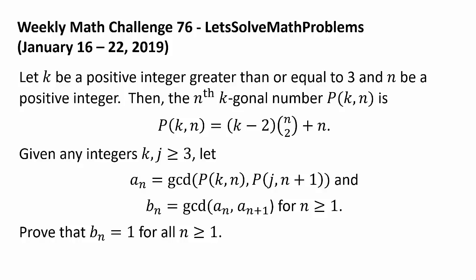let a sub n be the greatest common divisor of P(k,n) and P(j, n+1), and let b sub n be the greatest common divisor of a sub n and a sub n+1 for n greater than or equal to 1. Prove that b sub n is equal to 1 for all n greater than or equal to 1.